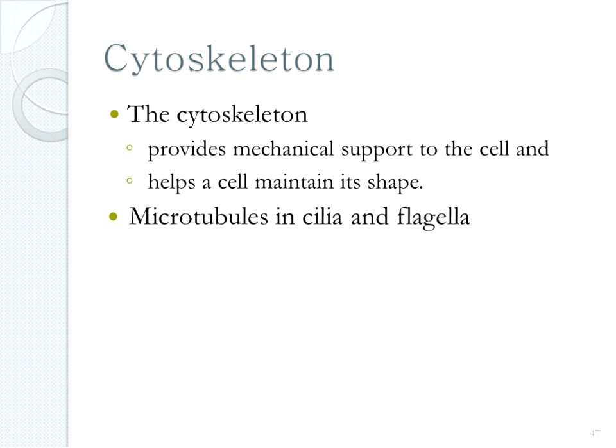The last organelle to discuss is not really a membrane-bound organelle: the cytoskeleton. It provides mechanical support. An important protein structure in the cytoskeleton are microtubules, which help the cell maintain its shape and are found in cilia and flagella. They are also found inside the cell as cells divide — the centriole helps microtubules separate chromosomes. We'll talk about that when we get into mitosis later in the semester.